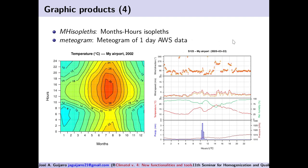Also shown is an example of a meteorogram for one day of automatic weather station data. The top panel shows wind direction averages in circles and the direction of gusts in red crosses. The second panel shows speeds both as 10-minute averages and maximum gusts. The third panel shows temperature in red and relative humidity in green. The fourth panel shows pressure in a brown line, and precipitation in blue bars.